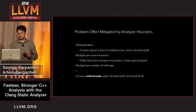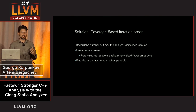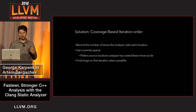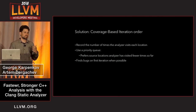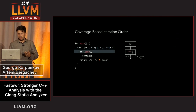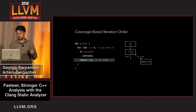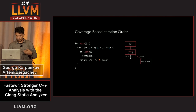To solve that, I decided to use a coverage-based iteration order, which is very similar to how coverage-guided fuzzing works. It basically records the number of times the analyzer visits each location and then uses a priority queue which prefers locations visited fewer times before. That allows the analyzer to find bugs on the first iteration whenever possible. Revisiting the running example with a coverage-based iteration order: at the branching point, instead of going back to the start of the loop, that node is deprioritized because we've been there before, and instead we can go straight to the error node.